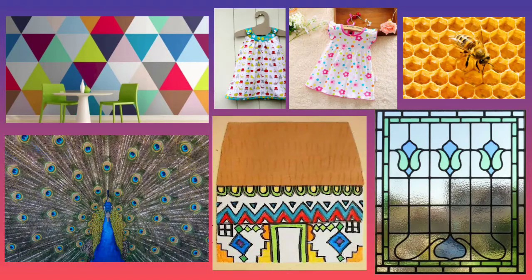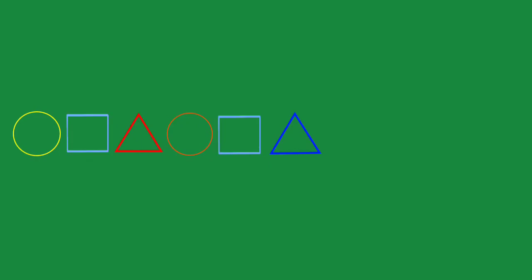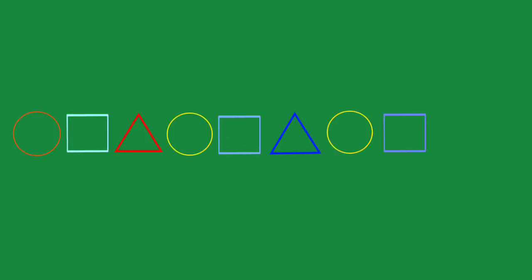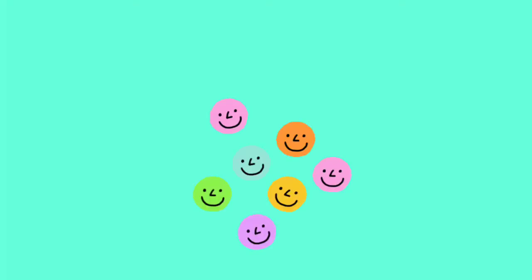For example: circle, square, triangle — circle, square, triangle — circle, square, triangle. This pattern of three shapes repeats over and over.